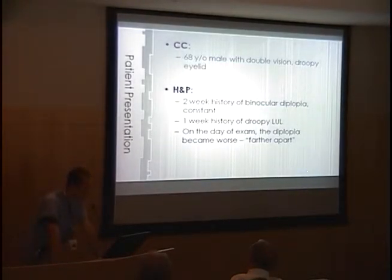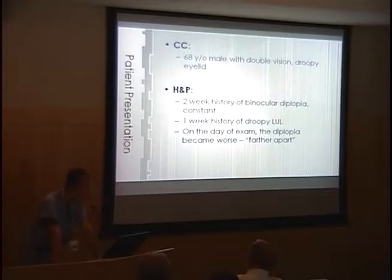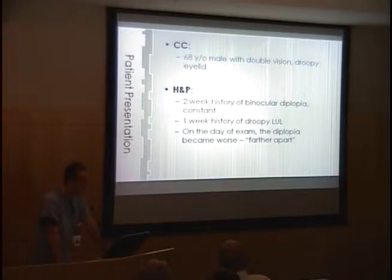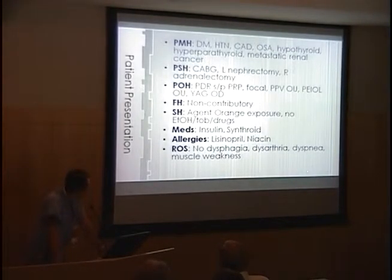This was a 68-year-old male veteran seen at the VA general clinic, first presenting with double vision, and a little bit after the onset of that, a droopy eyelid. Two weeks prior to his presentation he had the sudden onset of binocular diplopia, which he described as constant. Then a week after that, the droopy left upper eyelid started to bother him. On the day of exam he mentioned that the diplopia had gotten worse, with the images described as being farther apart from each other.